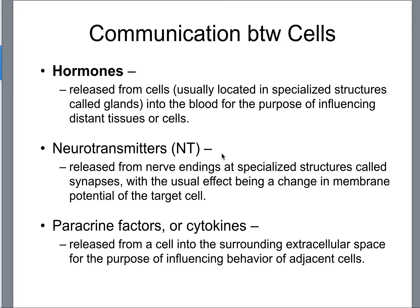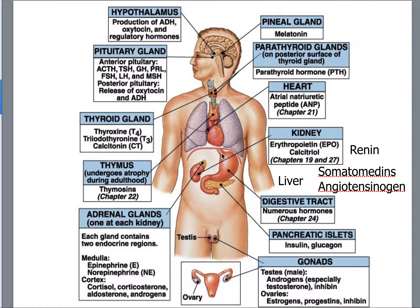Unlike neurotransmitters, neurotransmitters are associated with the nervous system. Different glands that we need to know for the endocrine system include hypothalamus, pituitary, thyroid, thymus, adrenal glands, pineal gland, parathyroid glands, heart gland or the glands associated with the heart, kidney, digestive tract, pancreatic islets, and then the gonads.